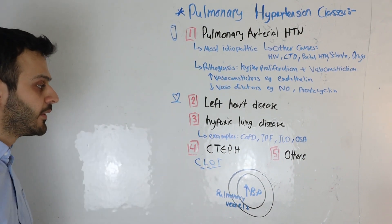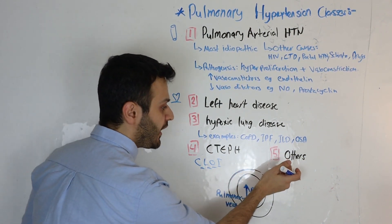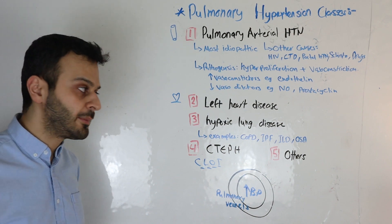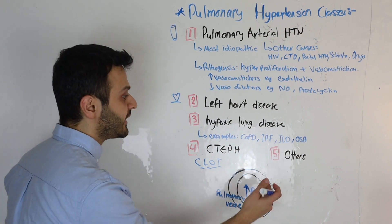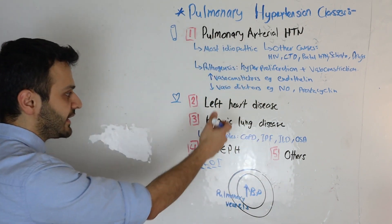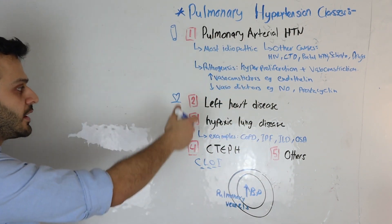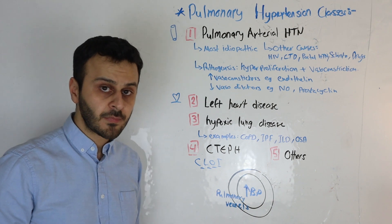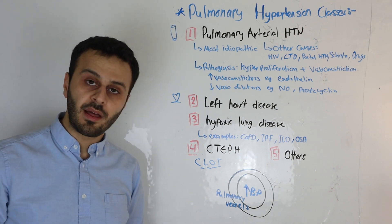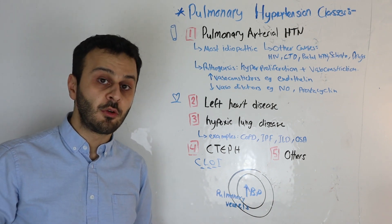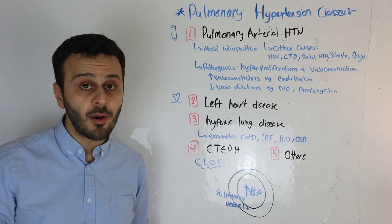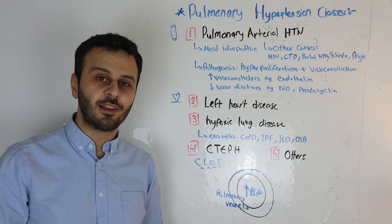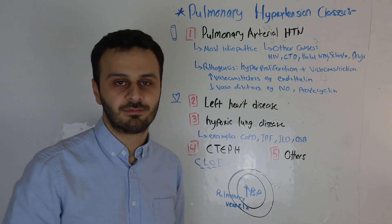Class 5 covers all other causes of pulmonary hypertension that do not fit into classes one through four. That's it — hope that was helpful. If you want to learn more about pulmonary hypertension, check out the link below. Thank you.